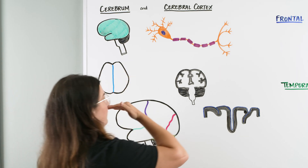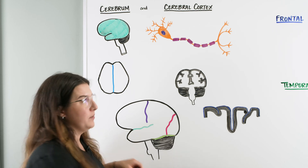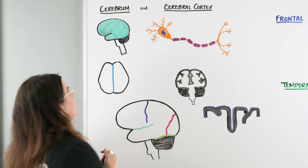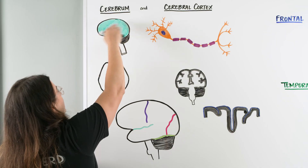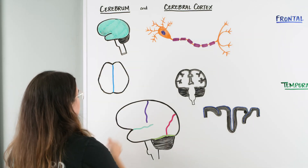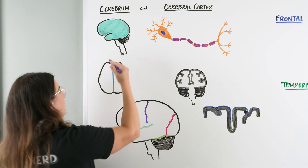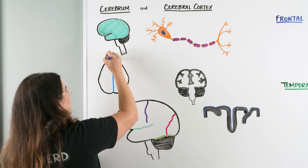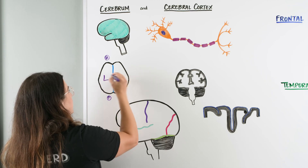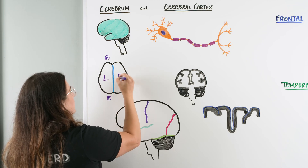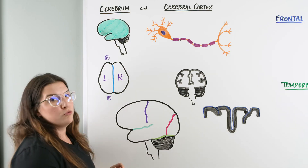You might be wondering why we're talking about both. Well the Cerebrum is our largest portion of our brain — that's where we have all of our higher functioning, and it's located in this whole blue shaded area. It can then be broken into our left and right hemisphere. When we look down we can see our left hemisphere and our right hemisphere, and down the middle of the brain it's divided by our longitudinal fissure.